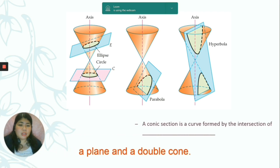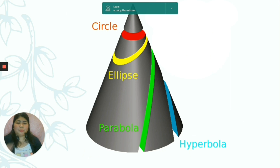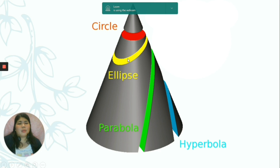A conic section is a curve formed by the intersection of a plane and a double cone. Here is another version of the conic sections in 3D. This one is the circle. If we cut it here, we can form the ellipse. If we cut it here, we can form the parabola. And if we cut it on this side, we can form the hyperbola — the hyperbola has two parts.